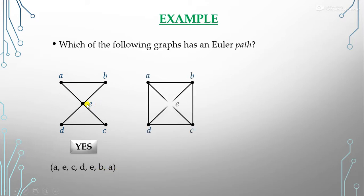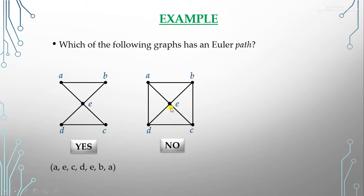The next graph does not form an Euler path either, because we cannot choose any path that covers all edges without repeating edges.